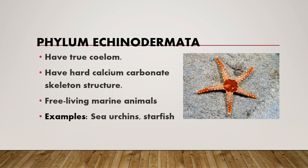You can see here the diagram of sea urchin and starfish. This type of phylum has a column — they have a hard calcium carbonate skeleton structure. They are free-living marine animals.